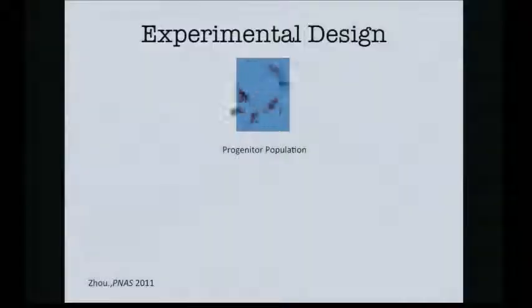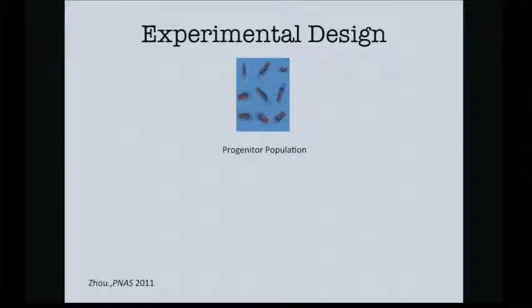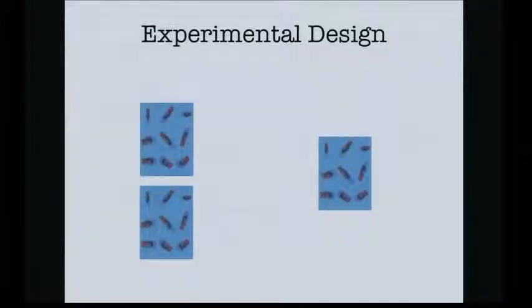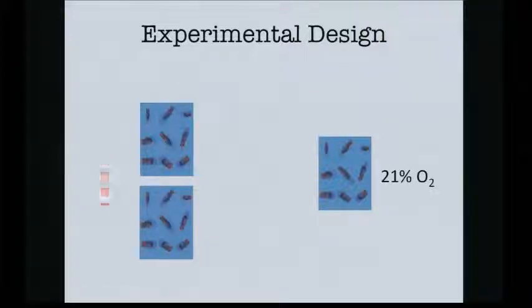In the first case, they had this very nice fly model where they took a progenitor population and asked what would happen if we reduced the oxygen in the chamber. They split it up into two parts: one was a control, and the other they gradually evolved under lower and lower oxygen until they reached 4% oxygen. That's significantly lower.